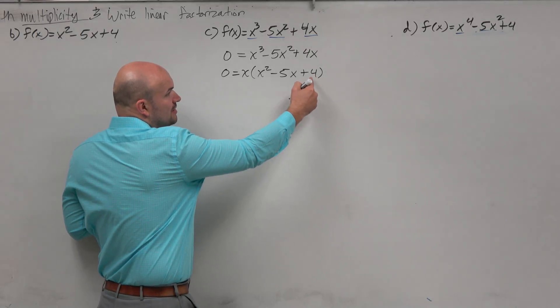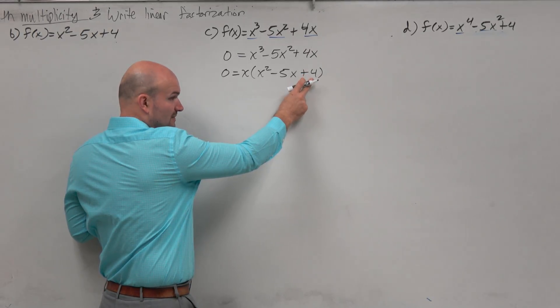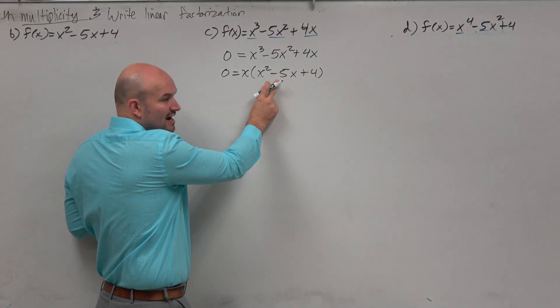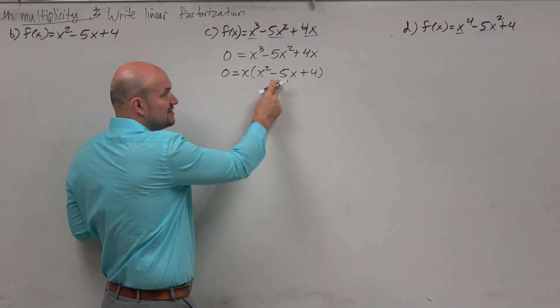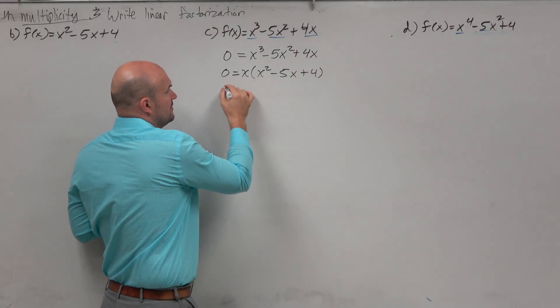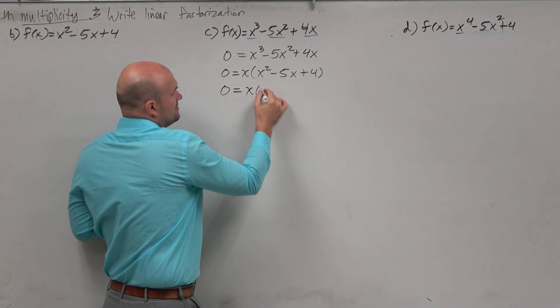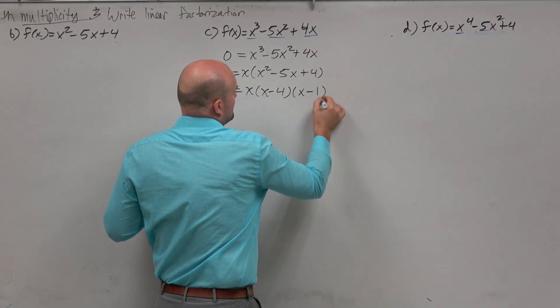I basically need to understand what two values multiply to give me 4 but add to give me negative 5. Well, since they're adding to give me a negative 5, that means my two factors of 4 need to both be negative. So I can write this as x times x minus 4 times x minus 1.